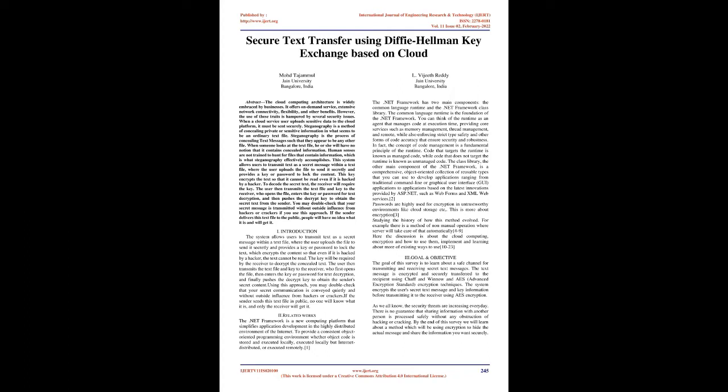This key encrypts the text so that it cannot be read even if it is hacked by a hacker. To decode the secret text, the receiver will require the key. The user then transmits the text file and key to the receiver, who opens the file, enters the key or password for text decryption, and then pushes the decrypt key to obtain the secret text from the sender. You may double-check that your secret message is transmitted without outside influence from hackers or crackers if you use this approach. If the sender delivers this text file to the public, people will have no idea what it is.